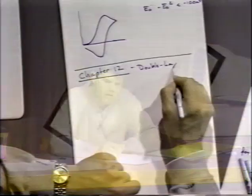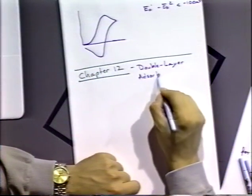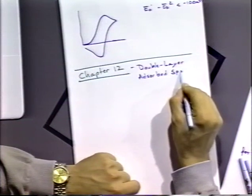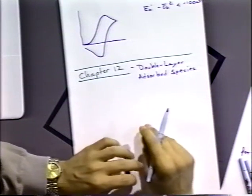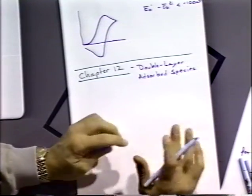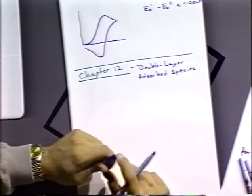Chapter 12 is a chapter that has to do with the double layer and about adsorbed species. Those two right off hand might not seem to be very much linked, but as we'll see they are quite linked in this treatment of the double layer and the adsorbed species.